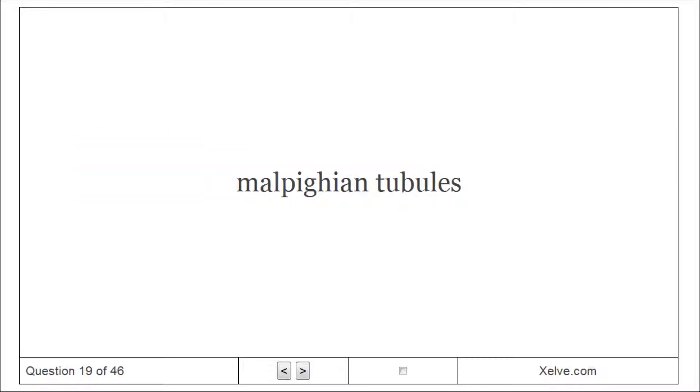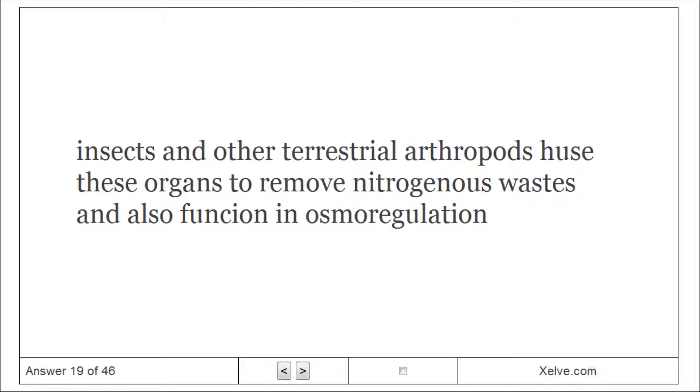Malpighian tubules: Insects and other terrestrial arthropods use these organs to remove nitrogenous wastes and also function in osmoregulation.